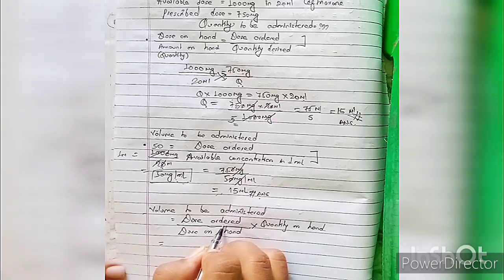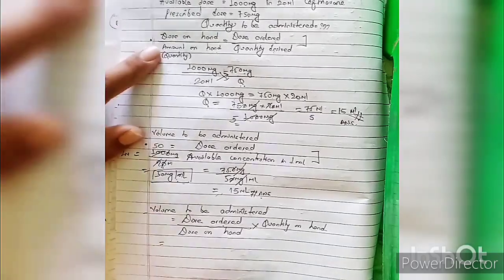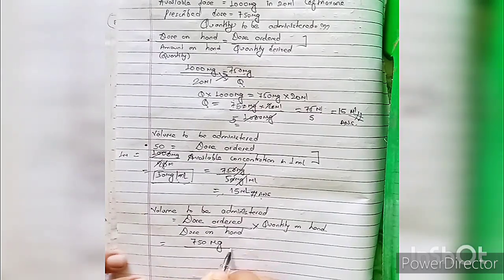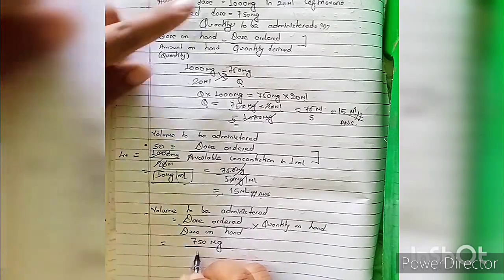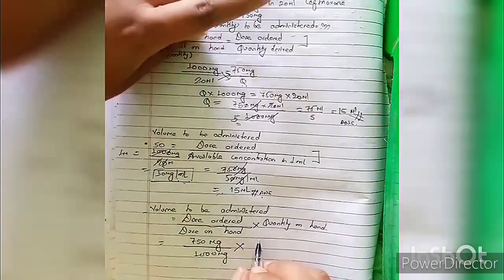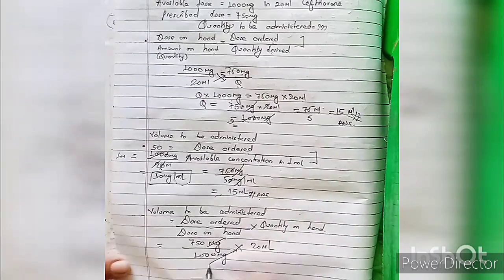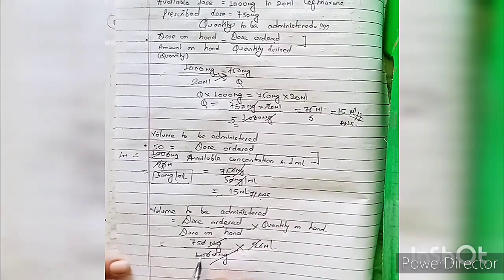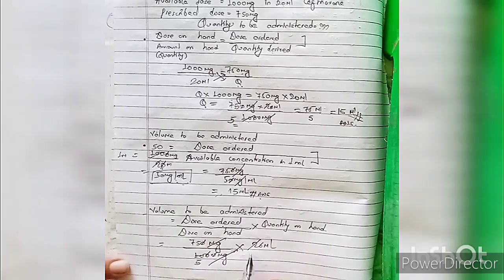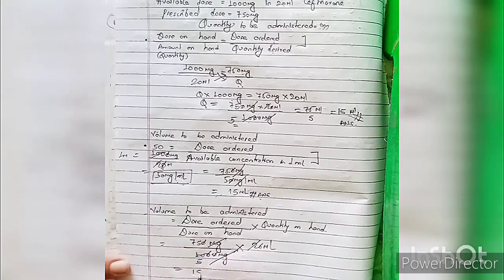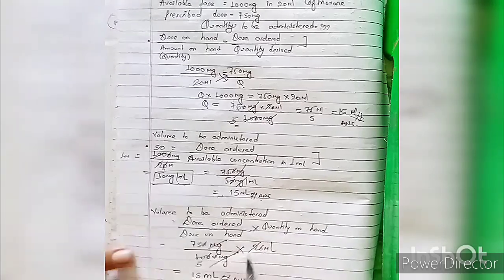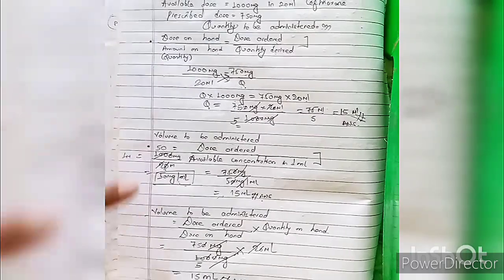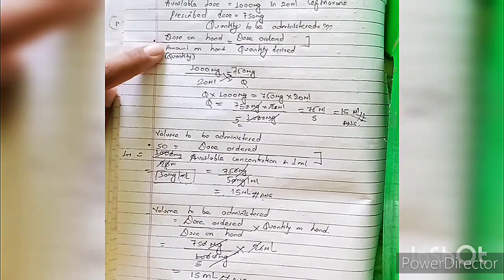Dose ordered 750 mg upon dose on hand 1000 mg, multiplied by quantity on hand 20 mL. mg cancels out, zeros cancel, and 75 divided by 5 gives 15 mL. So you can use any of the three formulas — they all produce the same answer.